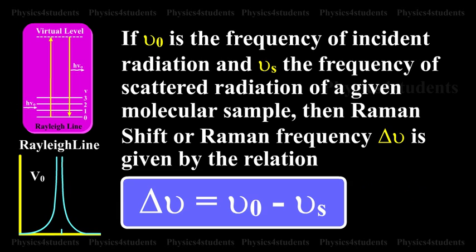If nu_0 is the frequency of incident radiation and nu_s is the frequency of scattered radiation of a given molecular sample, then Raman shift or Raman frequency, del nu, is given by the relation: del nu is equal to nu_0 minus nu_s.